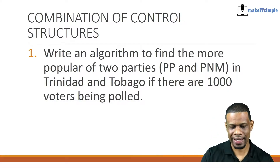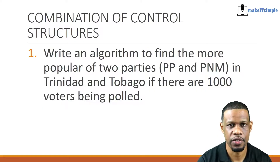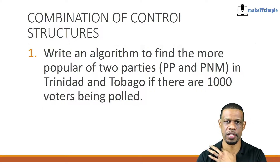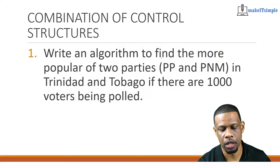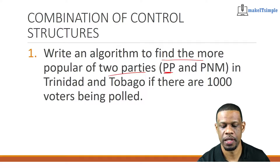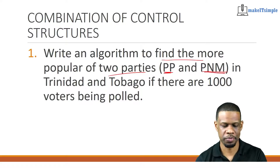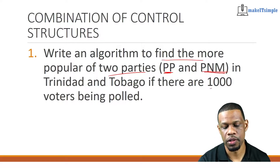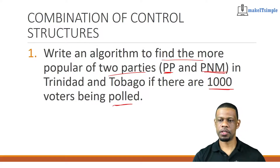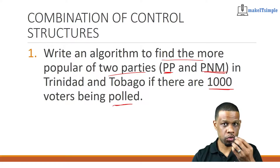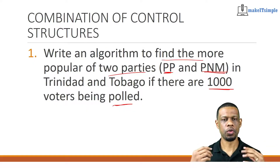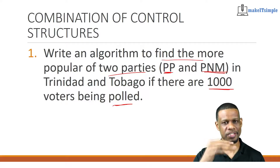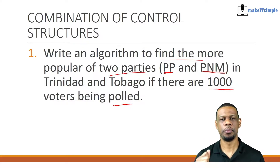This is a classic question that they ask a lot. This is actually a question that came up in Form 6 Computer Science — so if you could do this, you might be ready for Form 6. It says: write an algorithm to find the more popular of two parties. In this case, I have PP for People's Partnership and PNM. This was back when the People's Partnership was a thing. There are 1,000 voters being polled. You have to look at this question and pull out the things you are going to translate for the computer to understand.